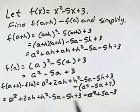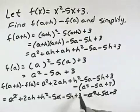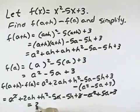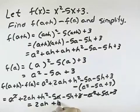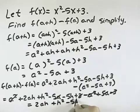which allows us to cancel an a squared, cancel a 5a, and cancel the 3s, leaving 2ah plus h squared minus 5h.